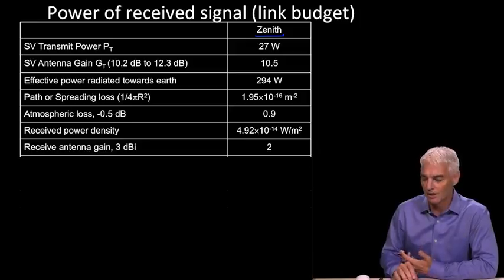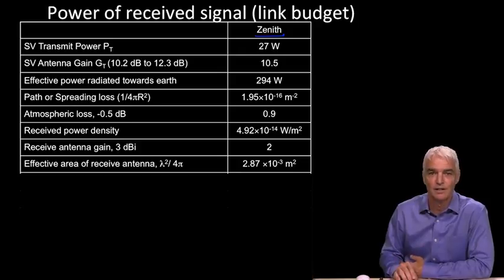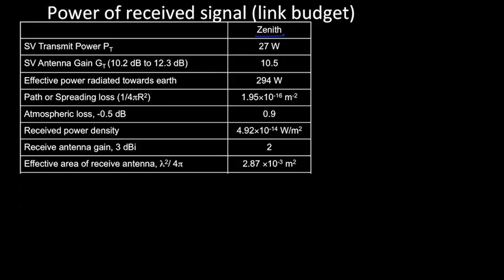There's a receive antenna gain for a patch antenna, as I just described, for 3 dBi would be 2. And the effective area of the antenna, which we just looked at in the previous video, is that number. Finally, there's something called polarization loss.